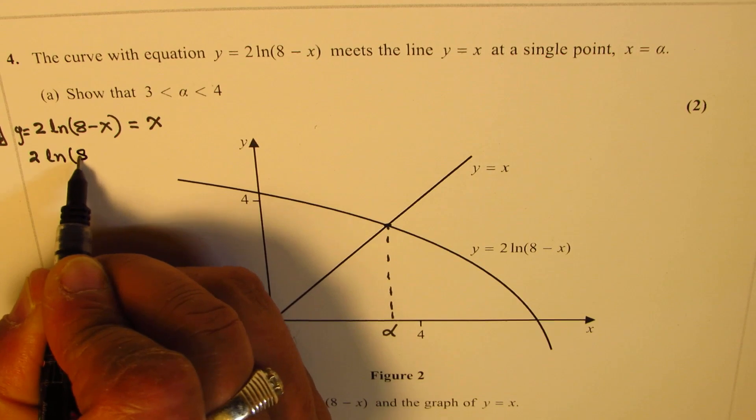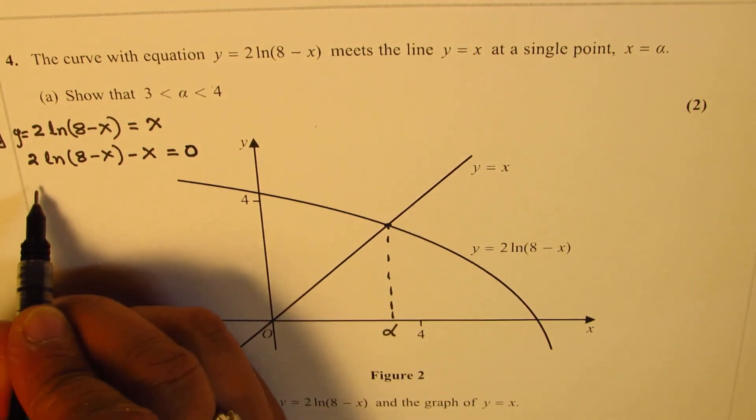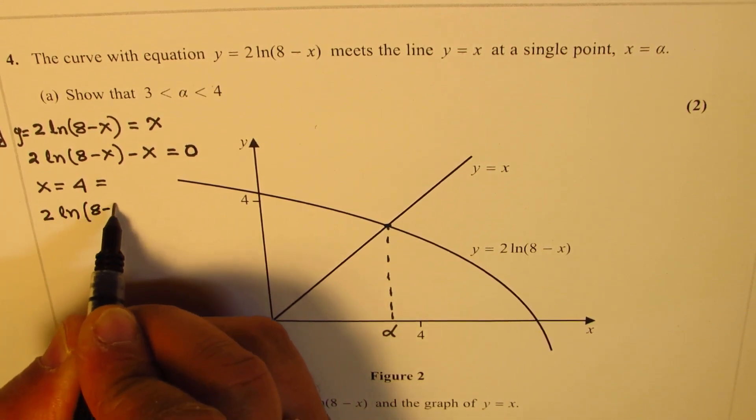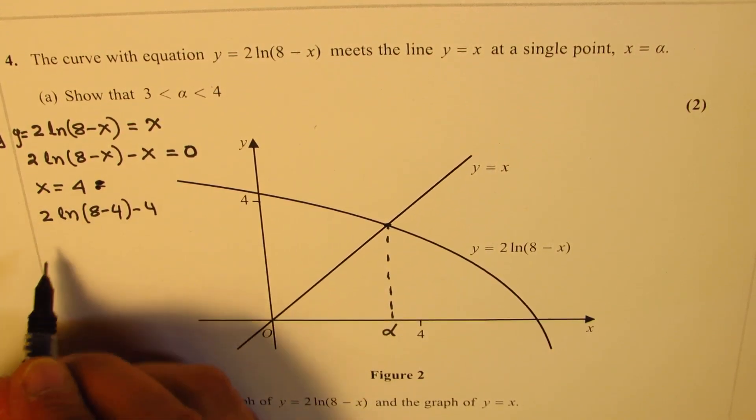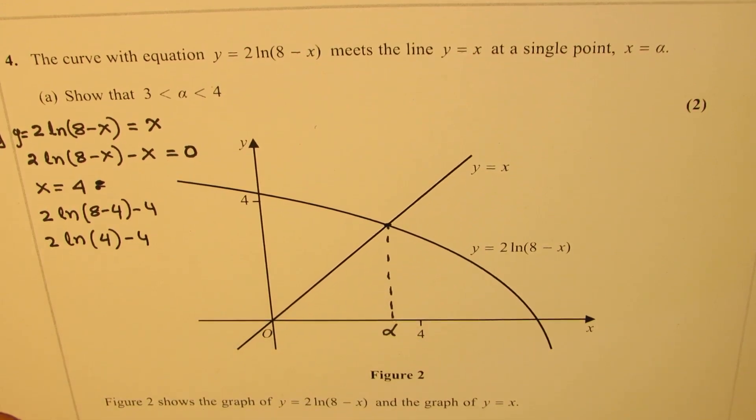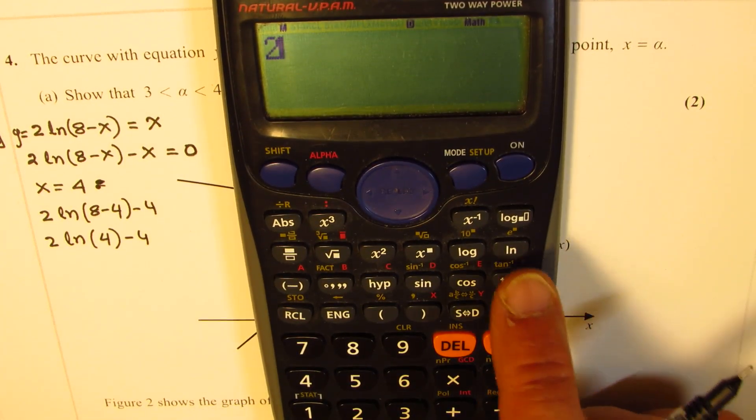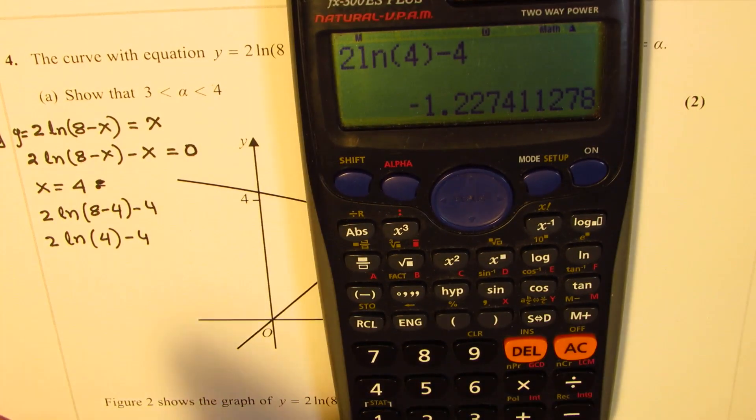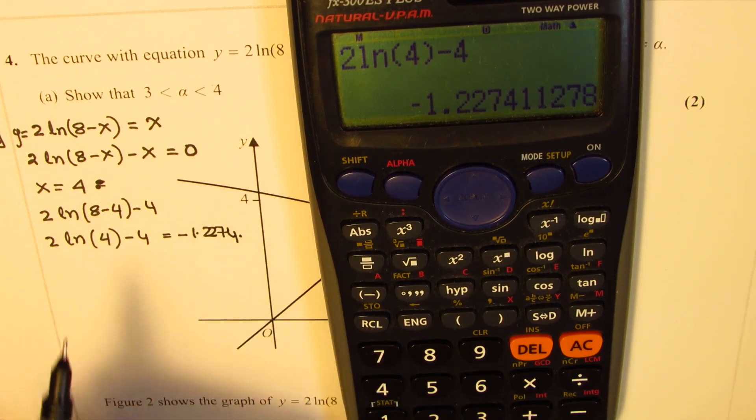We can write this as 2 ln(8 - x) - x equals 0. For x equals 4, we get 2 ln(8 - 4) - 4. Let's calculate this value. So 2 times ln(4) minus 4 is basically equal to -1.2274.